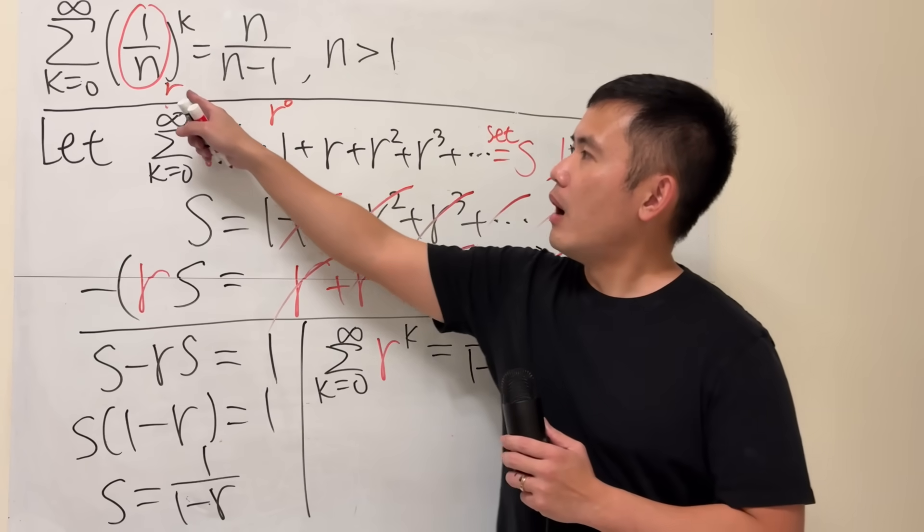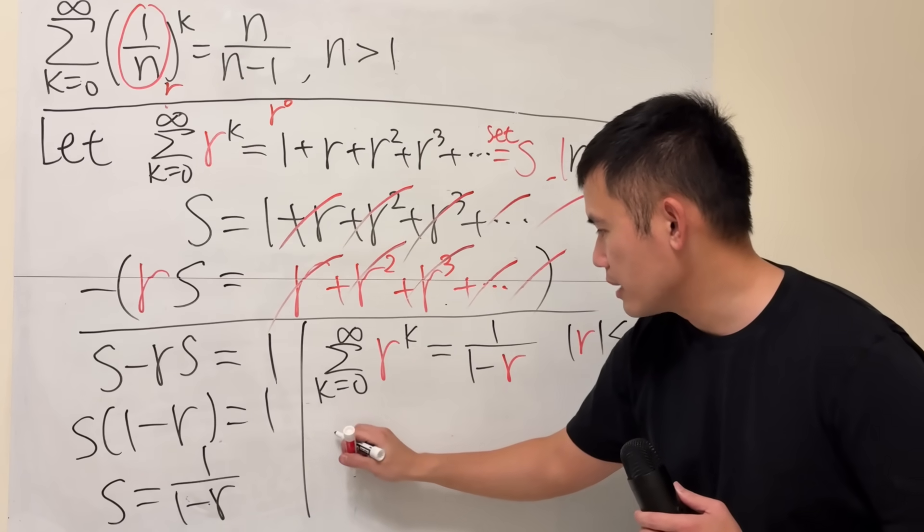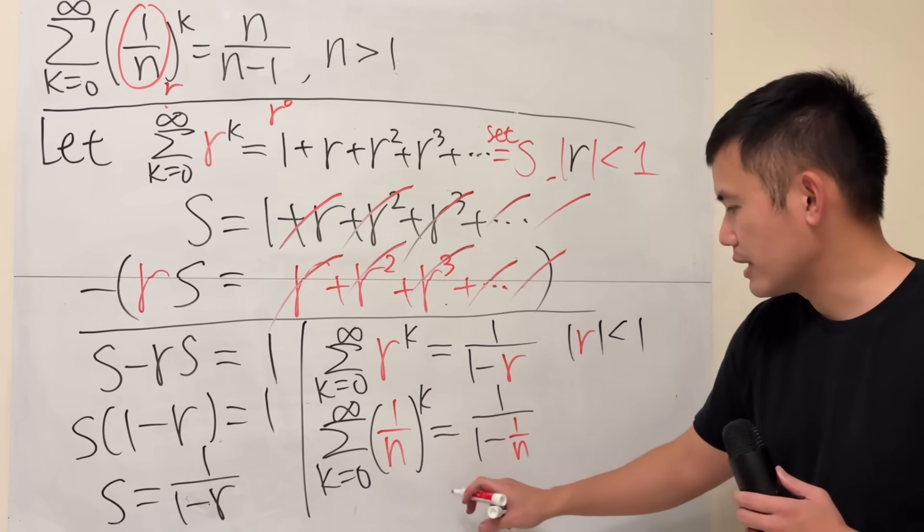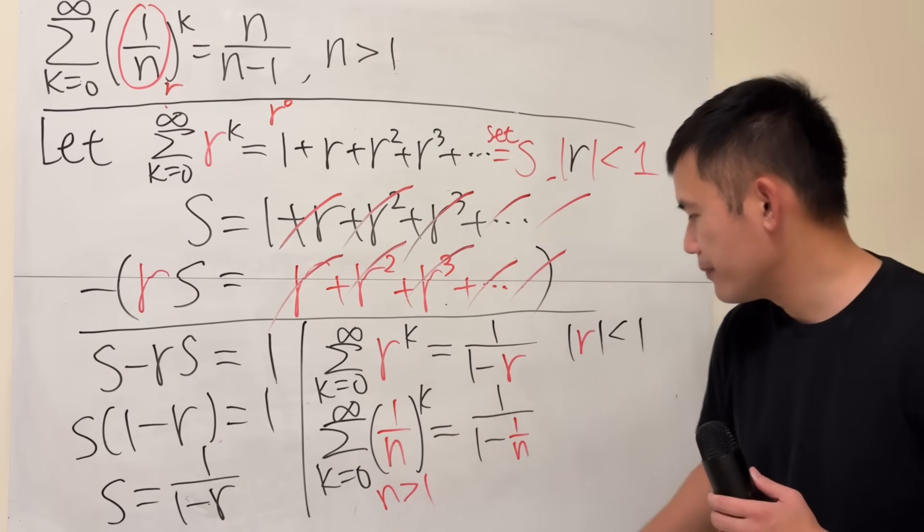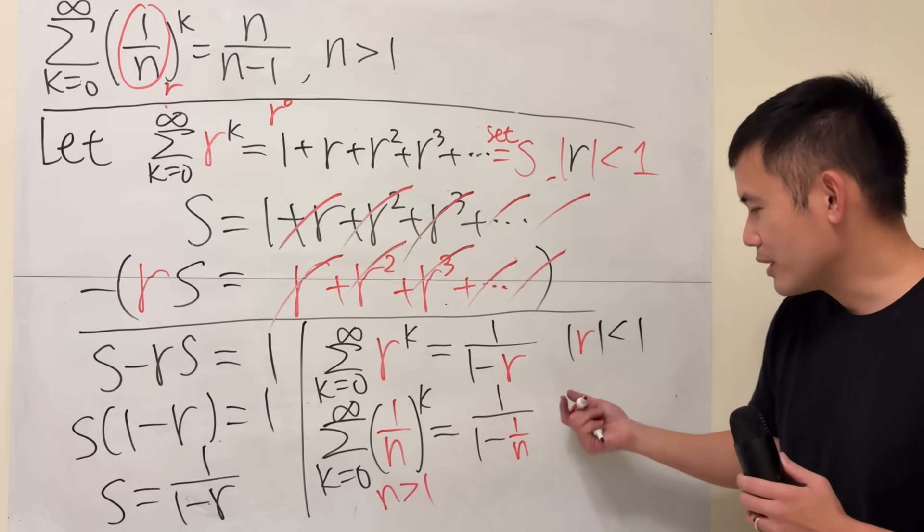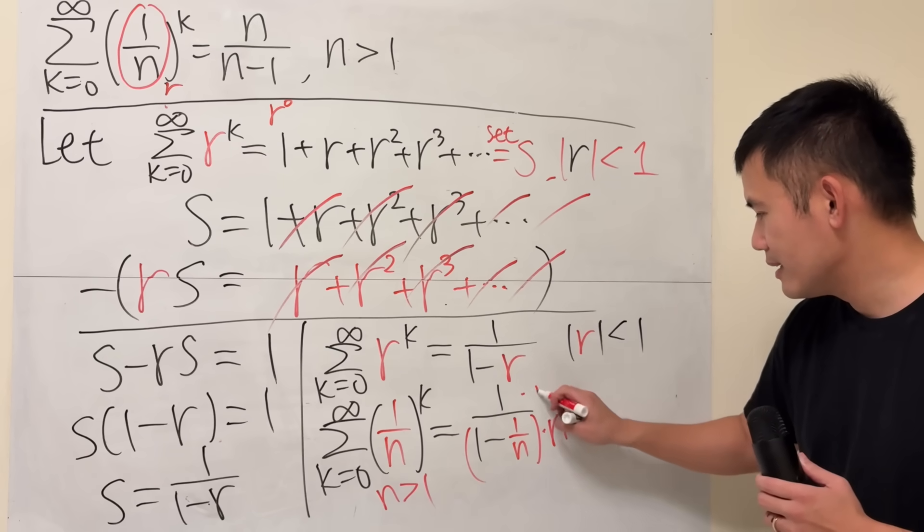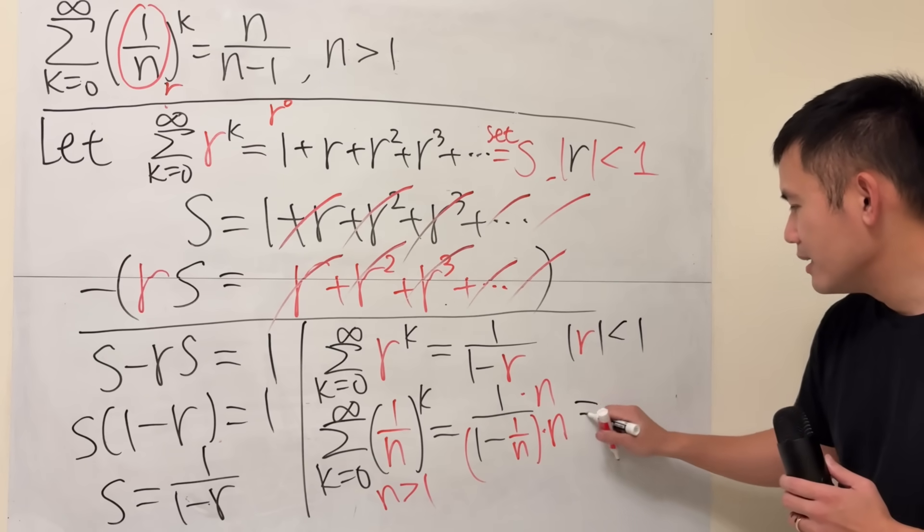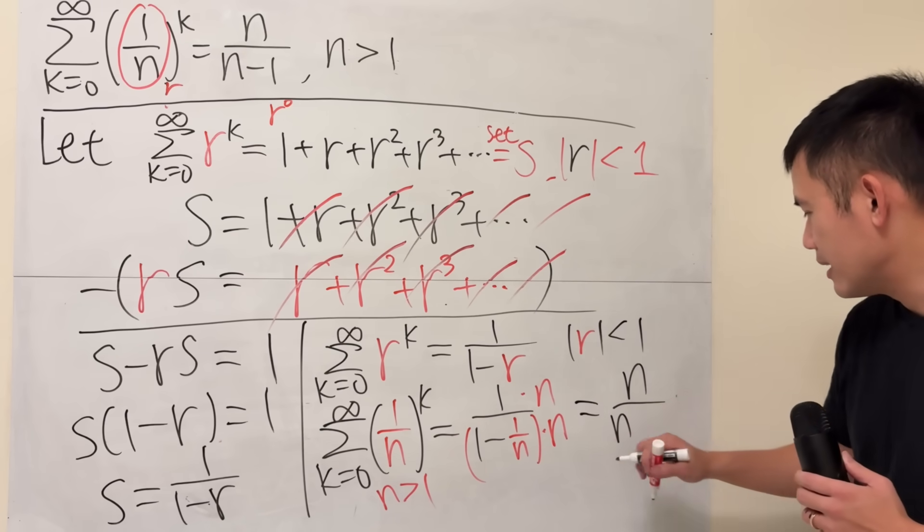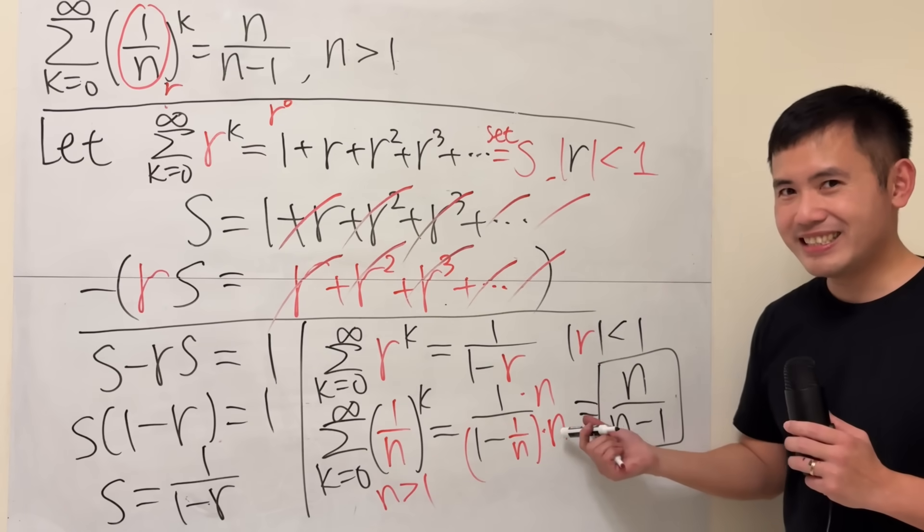Now, I want r to be 1 over n. So all we have to do is plug in 1 over n. And n is greater than 1. You just have to make sure you write it down somewhere. So the whole thing here is less than 1, which is absolute value. And then right here, we can just simplify it. Multiply the top and bottom by this n. So the top is just going to be n. Distribute, we get n. Multiply, n cancels. And we get exactly that. That's it.